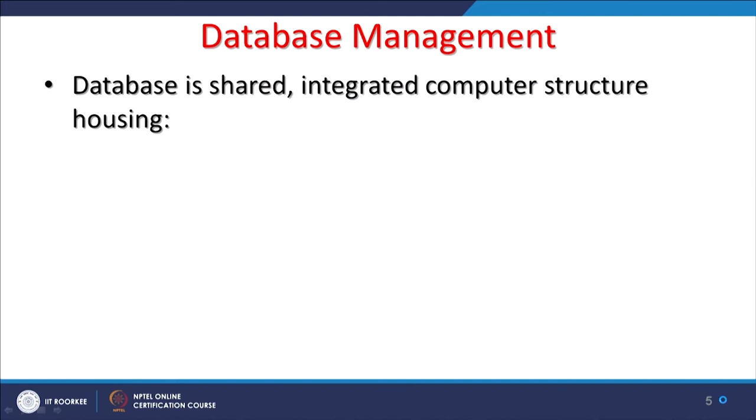A database is a shared integrated computer structure which houses end-user data as well as metadata — that is, data about the data. The information about the data is called metadata. For example, when you download a free satellite image, you will find a file with a .met extension — that contains the metadata: when the image was acquired, which satellite, which sensor, what kind of processing has been done. It is good practice for organizations to record everything about the data, including who generated it, how much processing has been done, and when it was generated.